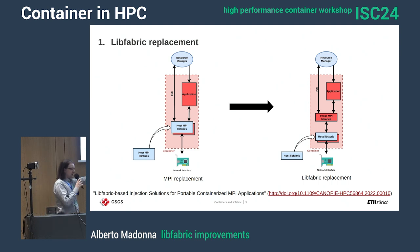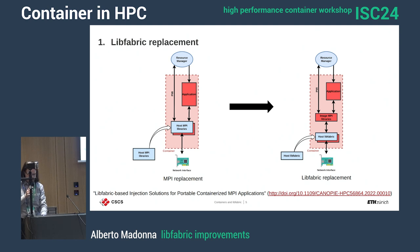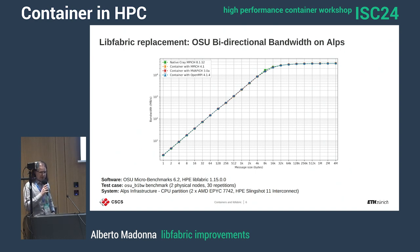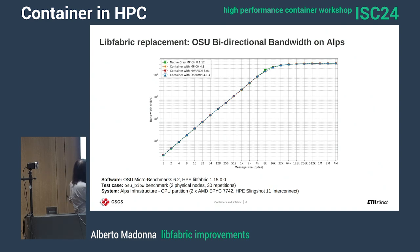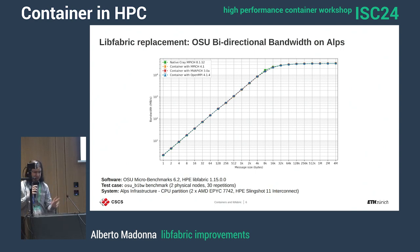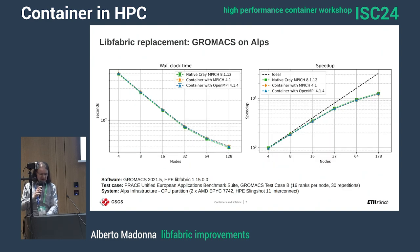I'm going quickly, but if you want details there is a published paper that goes into more formalities and rigorous evaluation. This is an experiment I did a little more than a year ago — an OSU bidirectional bandwidth test on ALPS, our latest generation system at CSCS. There are four data series in this plot: one native MPI and three container MPIs, and we're just working at the LibFabric level. It also works with applications — this is an example with GROMACS.